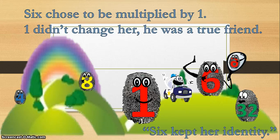Six chose to be multiplied by one. One didn't change her. He was a true friend. Six kept her identity.